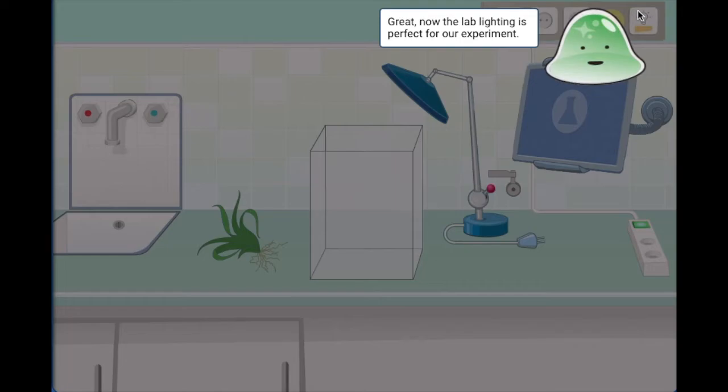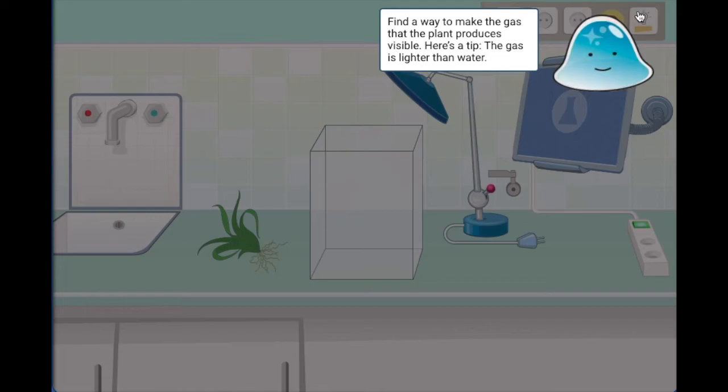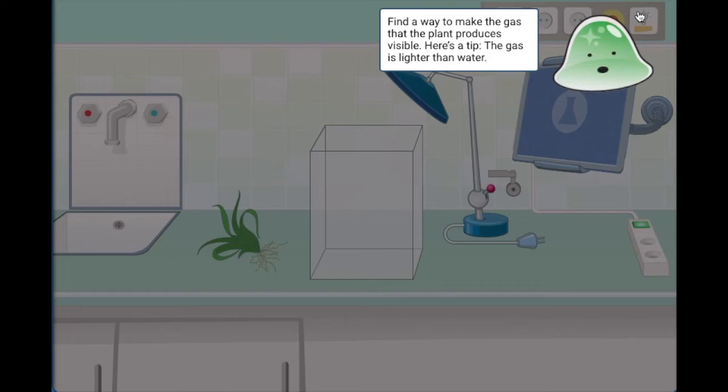Great. Now the lab lighting is perfect for our experiment. For this experiment, I have brought you a water plant from the laboratory garden. We are going to need it because the plant produces a gas in the process of photosynthesis. Find a way to make the gas that the plant produces visible. Here is a tip: the gas is lighter than water. So now we have to think about it. How will the gas be visible?